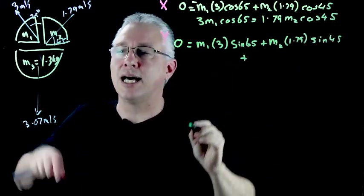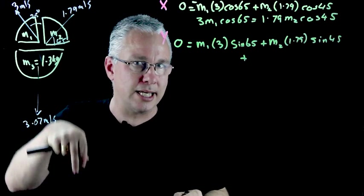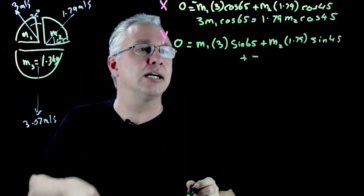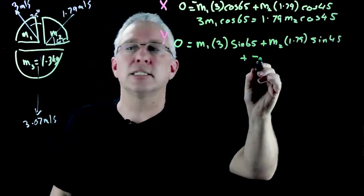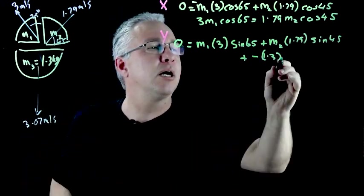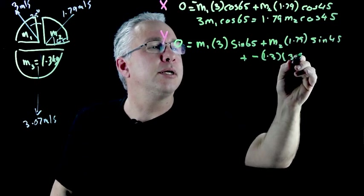But now we also have to add this one as well because there is actually a y component but this is negative because it's heading down and in this case we know the mass so we might as well just put that straight in, 1.3 multiplied by 3.07.